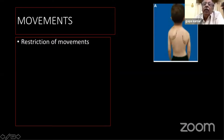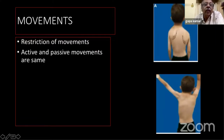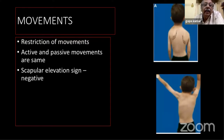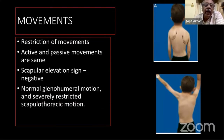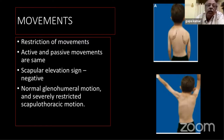Looking at movements, there will be restriction of movements but a reasonable amount is usually preserved. Active and passive movements are usually the same. The scapular elevation sign will be negative. Normal glenohumeral movements will be present, but scapulothoracic movement will be severely restricted because the scapula is rotated and not moving freely. About 30% of shoulder movement is contributed by the scapulothoracic joint, and that will be affected, while the glenohumeral joint usually retains a reasonable range of movement.